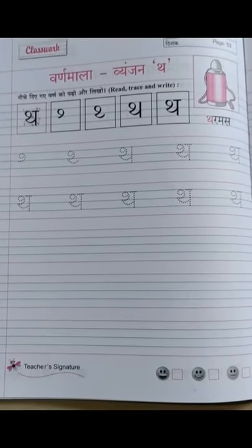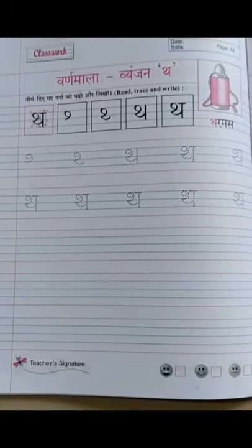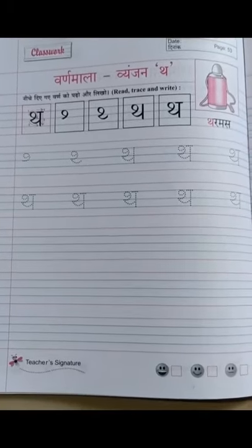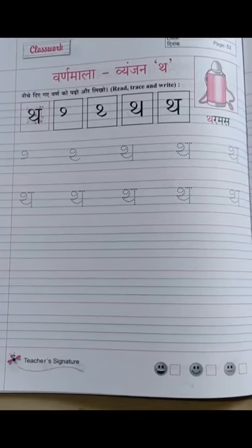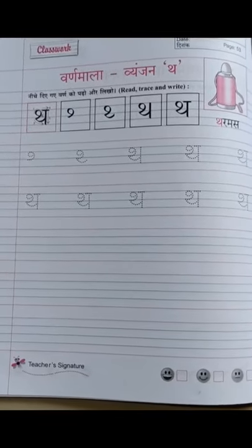Thar se kya hota hai? Thar mas. In the similar manner as it is done in the book, you will be writing both the pages. First do the dotted lines and then write it. How will you read it? Please read it.